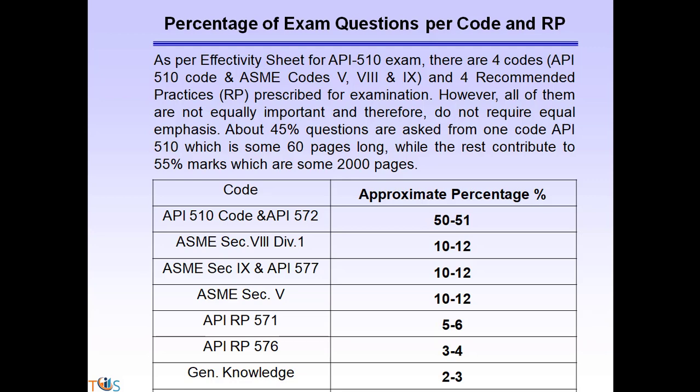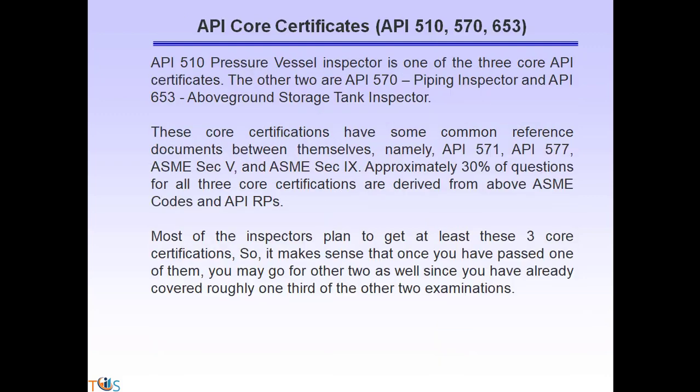ASME Section 9 welding and API 577 welding inspection and methodology account for around 10 to 12 percent. ASME Section 5 and non-destructive testing constitute around 10 to 12 percent. API 571 damage mechanisms is 5 to 6 percent. API 576 is 3 to 4 percent. General knowledge and safety are each 2 to 3 percent.